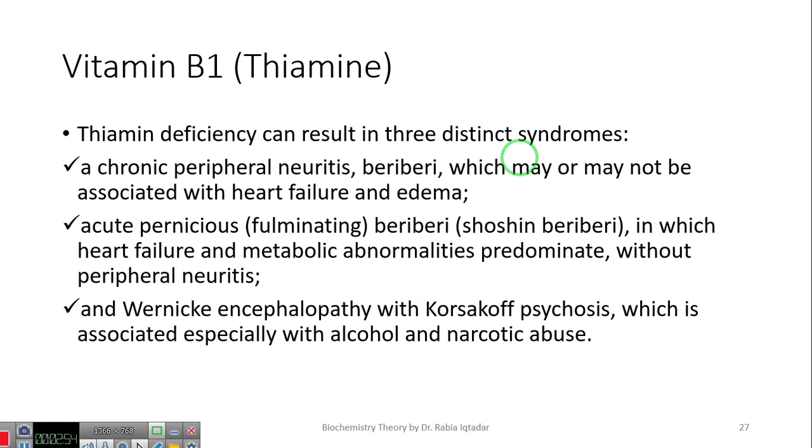It can be dry beriberi which is chronic peripheral neuritis. In dry beriberi, nerve damage occurs and it causes muscle weakness and eventually complete paralysis. The second type of beriberi is acute pernicious beriberi and we also call it wet beriberi, in which heart failure and metabolic abnormalities predominate without peripheral neuritis. It means that in this wet beriberi, mostly nerve damage does not occur, but there are more chances of heart failure.